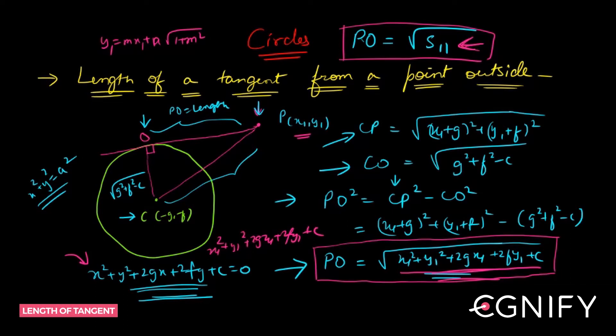So under root s11 is the length of the tangent. So next time when you see a circle and when you have a point outside, right, x1 y1, and you have the circle's equation, you simply do s11 and take the square root of it. This quantity will give you the length of the tangent.